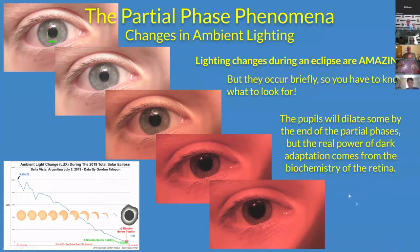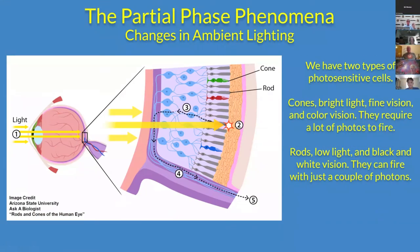I showed you this lux curve before, and during an eclipse our pupils will dilate. But that's not the most important thing for our adaptation — our dark adaptation before an eclipse. Because the eclipse happens over an hour and a half, our eye-brain system has an amazing ability to dark adapt for the changing lighting. We have two types of cells in the back of our retina: the cone cells, which are for bright light and color vision because they absorb at three wavelengths of light, but they require a lot of photons to fire.